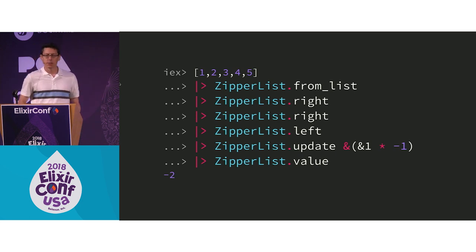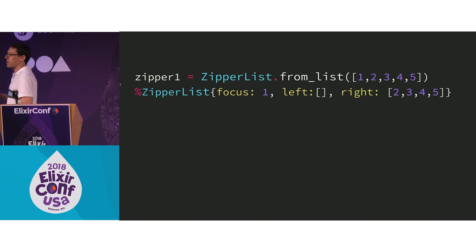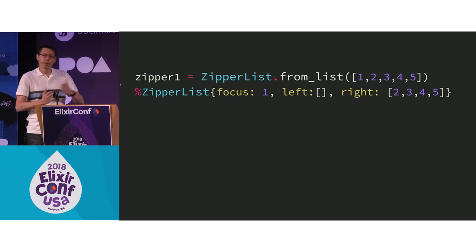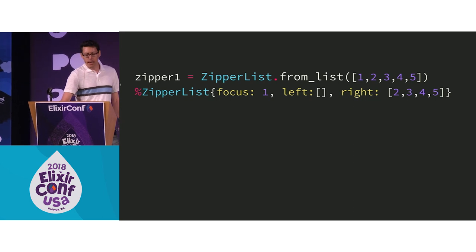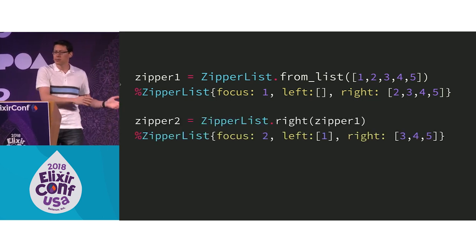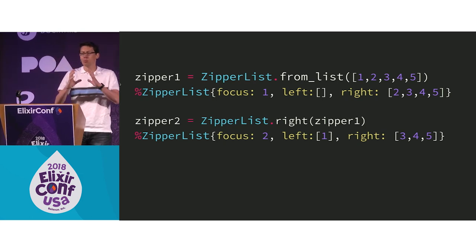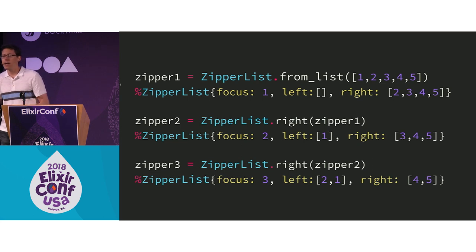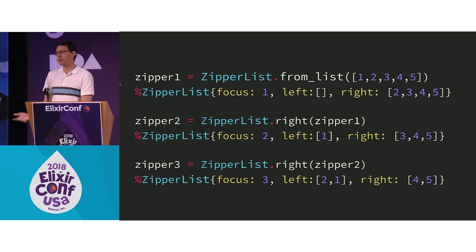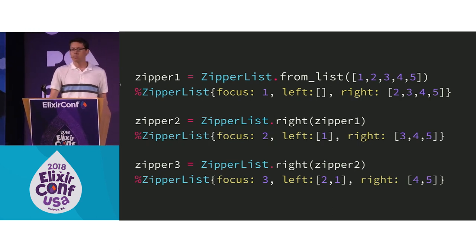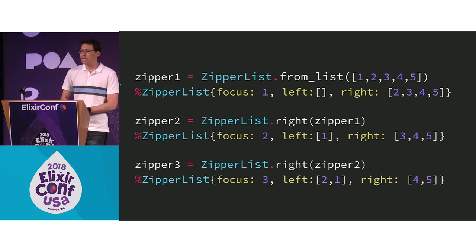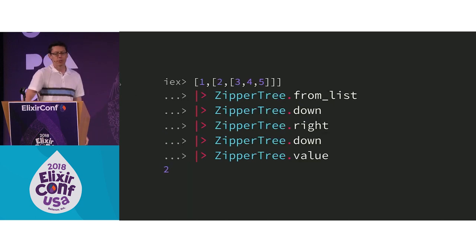The magic data structure of a zipper: you keep track of what your focus is, and then you have a list of everything to the left and everything to the right of your focus. If you want to move to the right, you put your current focus into the left list and take the head of the right list as your new focus. If there's nothing to the right, it's an empty list and you know you can't go there. It's clean and simple — there's no logic, you're just looking at data to figure out the behavior. And it works for trees as well, where you can also move up and down.